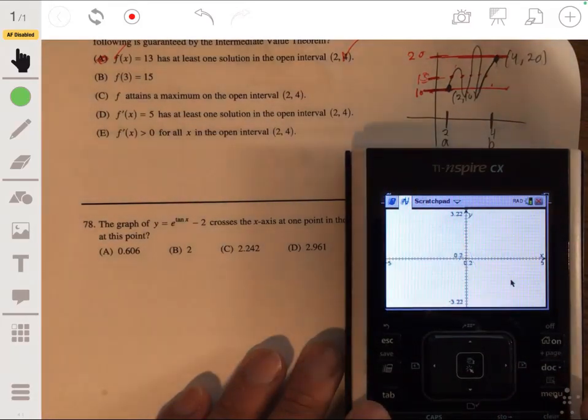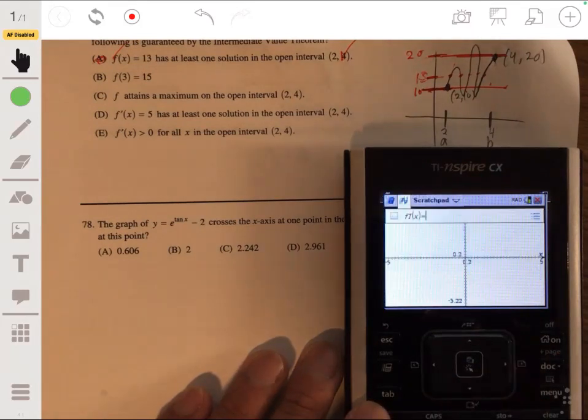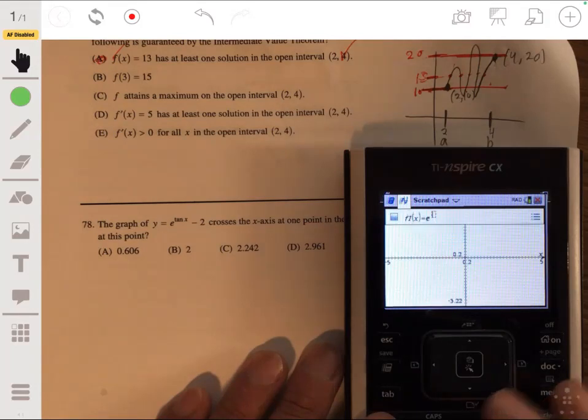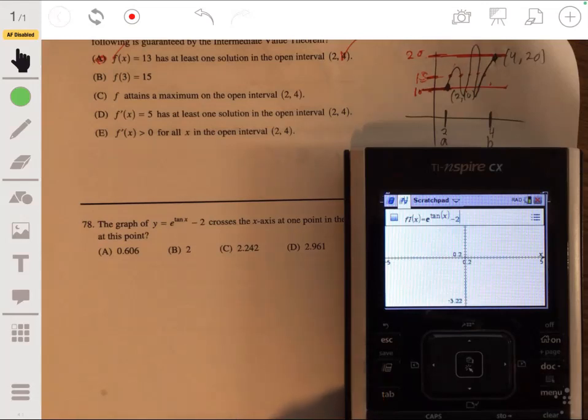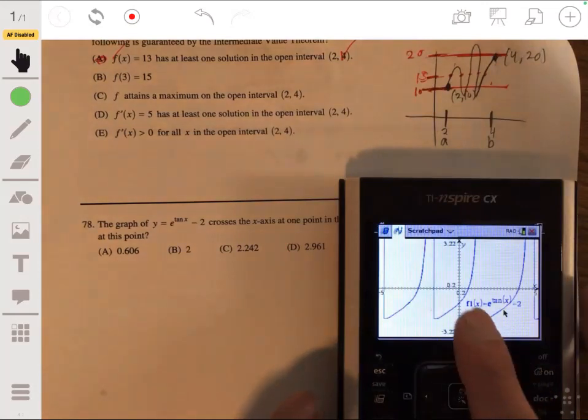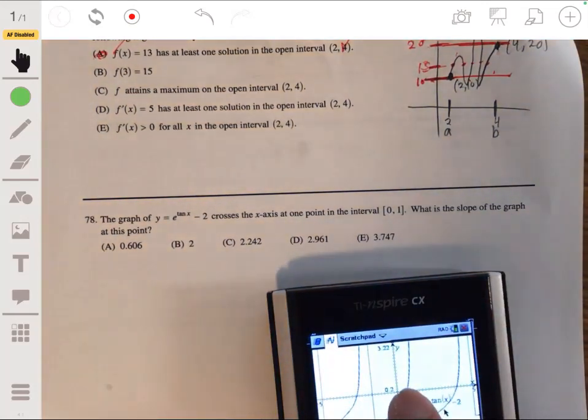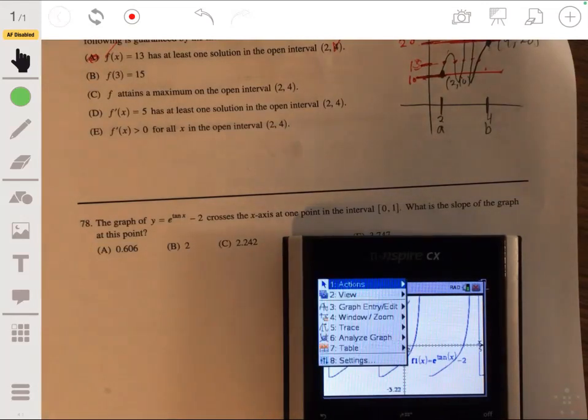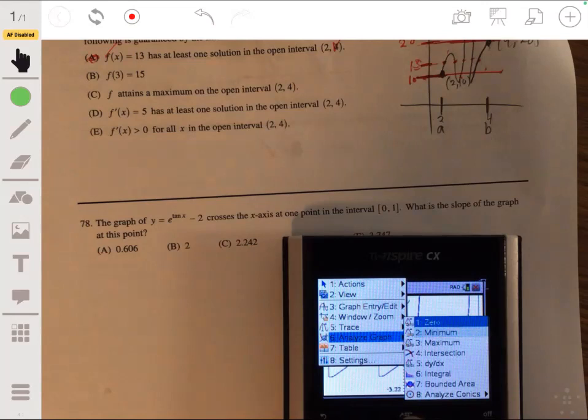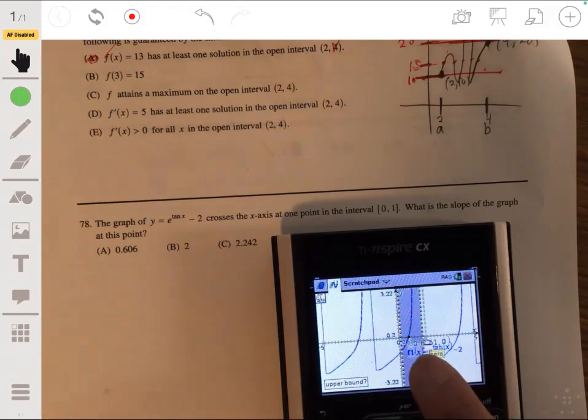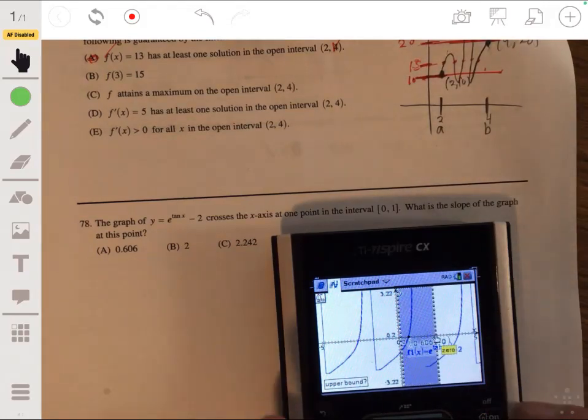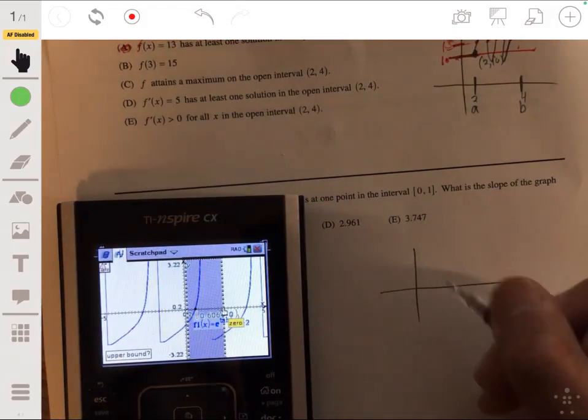Delete, delete, delete. Then you graph function y = e^(tan(x)) - 2. So that's all sorts of things. But we only care about from 0 to 1. So it's going to be somewhere over here. So let's zoom in. And let's see what the zero is on this first region here. So we're going to make our lower bound 0 and you can see that it intersects the x-axis at about 0.606.